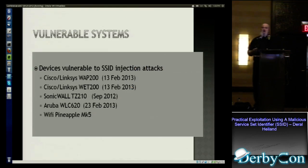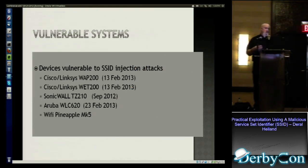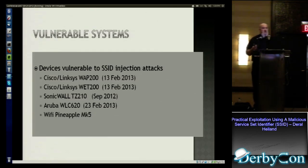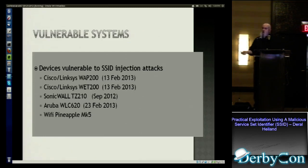Some of the vulnerabilities we've published on include five general devices as part of the initial discovery: a couple of Cisco Linksys devices, a SonicWall, an Aruba wireless LAN controller, and of course the Wi-Fi Pineapple. We're going to discuss a number of these and demo a couple of them today.